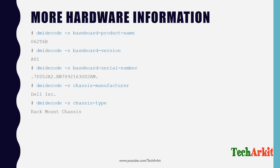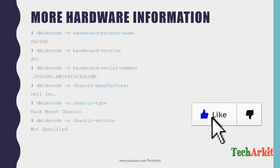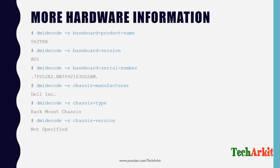The manufacturer details — whether it is Dell, HP, or IBM — are also available from the baseboard query. You can also check the chassis type to determine the server form factor: rack-mounted, tower, desktop, or tabletop. The chassis type command shows it is a rack-mounted chassis. Chassis version details (such as 1U or 2U) may also be provided by some vendors. The chassis serial number matches the server's service tag.